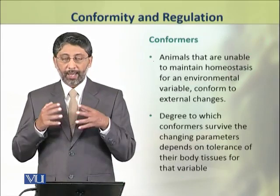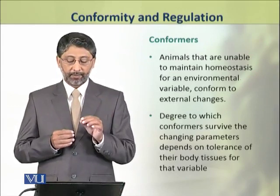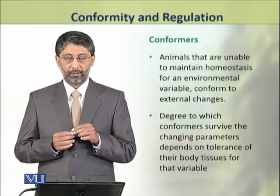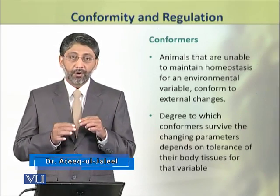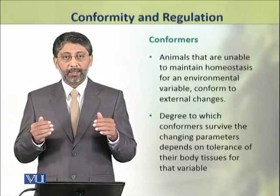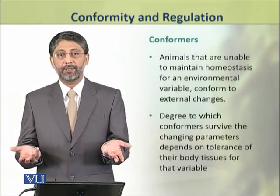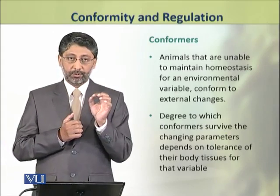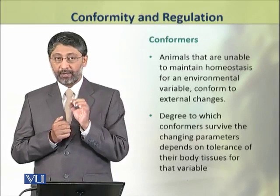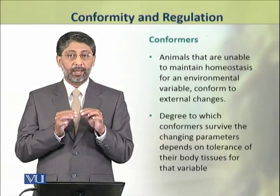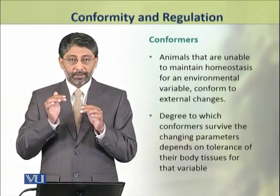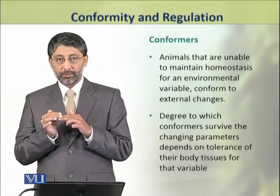The conformer animals are those which are unable to maintain homeostasis for an environmental variable. These animals conform to that external variable. The degree to which the conformers conform depends on their level of survival — as far as surviving conditions allow, conformation occurs. That depends on the tolerance level of body tissues to that variable.